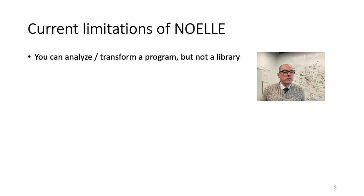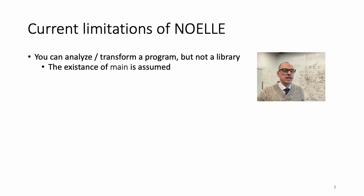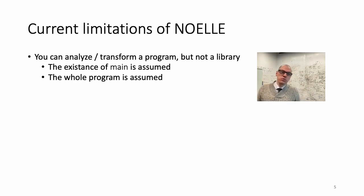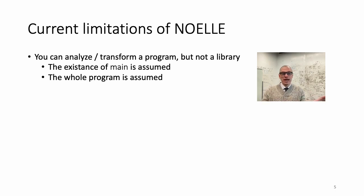The current limitations of NOEL, from an engineering point of view, is that you can analyze and transform a program, but not a library. The NOEL infrastructure assumes you have the function main in your IR — when you invoke NOEL on an IR, main is assumed to exist. The whole program is also assumed to be in that IR. You can slice your program into multiple external libraries with separate compilation and keep them separate, then have that slice in the IR and optimize it.